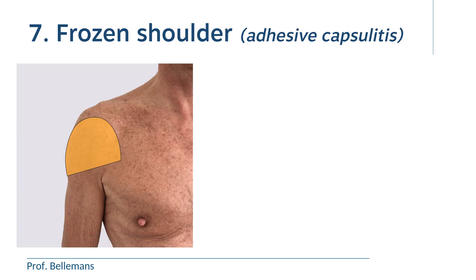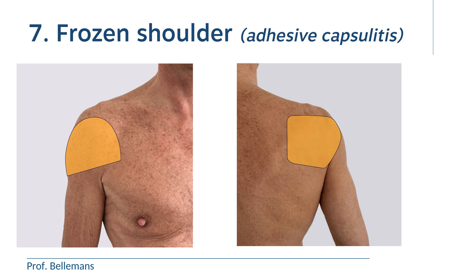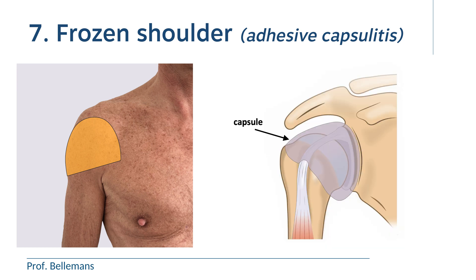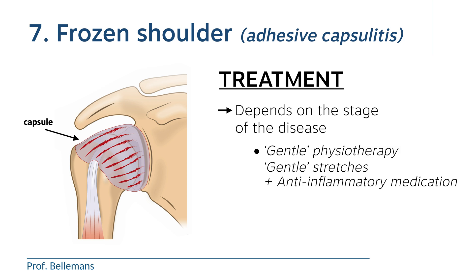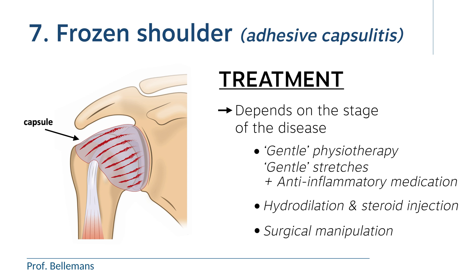Number seven: frozen shoulder, also called adhesive capsulitis. In frozen shoulder, the whole shoulder is painful — in the front, the side, and the back — but more importantly, the shoulder also feels very stiff. The reason is that the capsule around the shoulder has shrunk, which creates tightness and loss of mobility. Treatment depends on the stage of the disease and evolves from gentle physiotherapy with gentle stretches combined with anti-inflammatory medication, to hydrodilatation and steroid injection, and sometimes surgical manipulation.